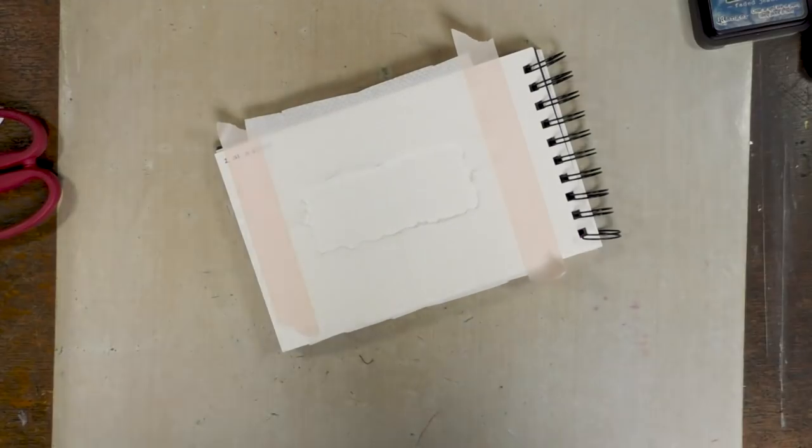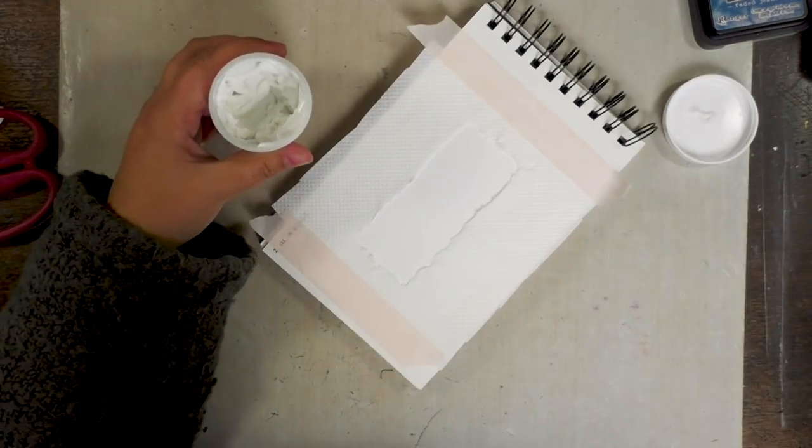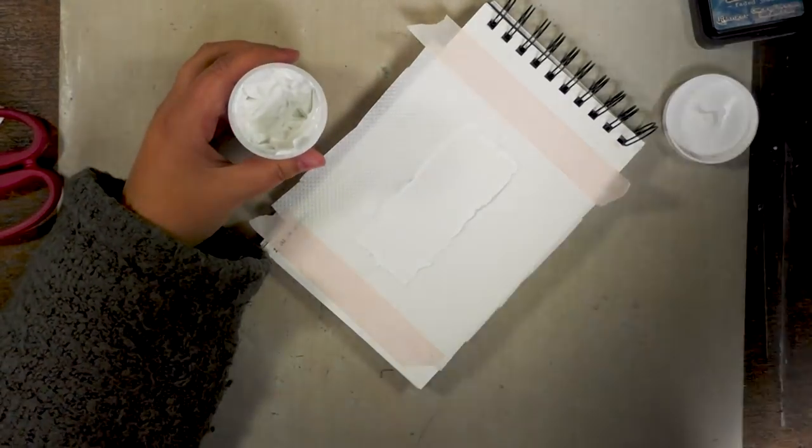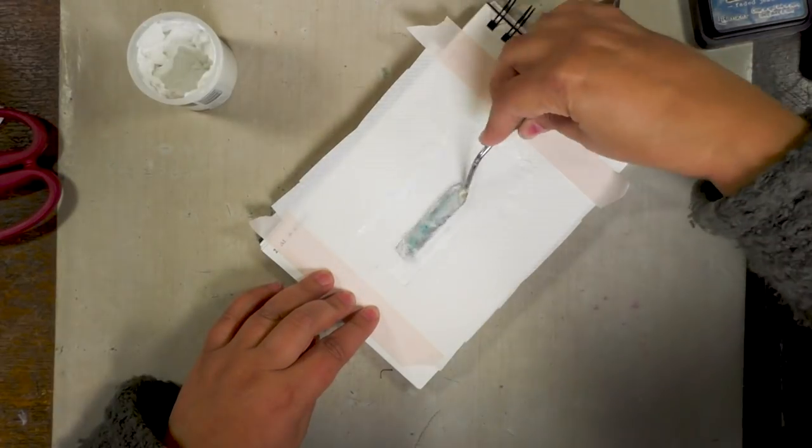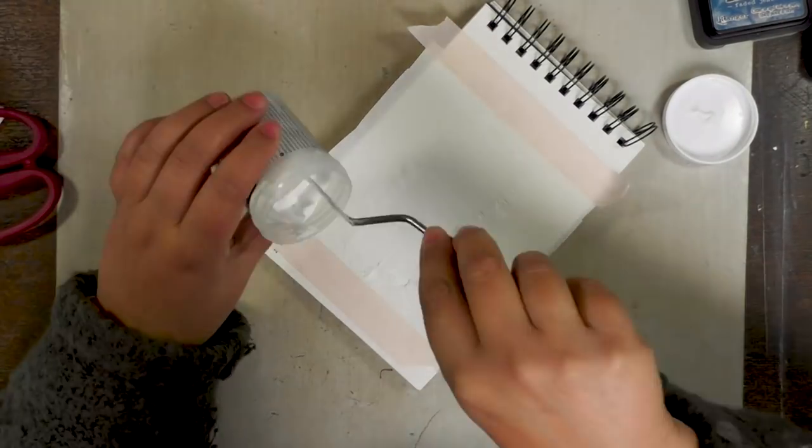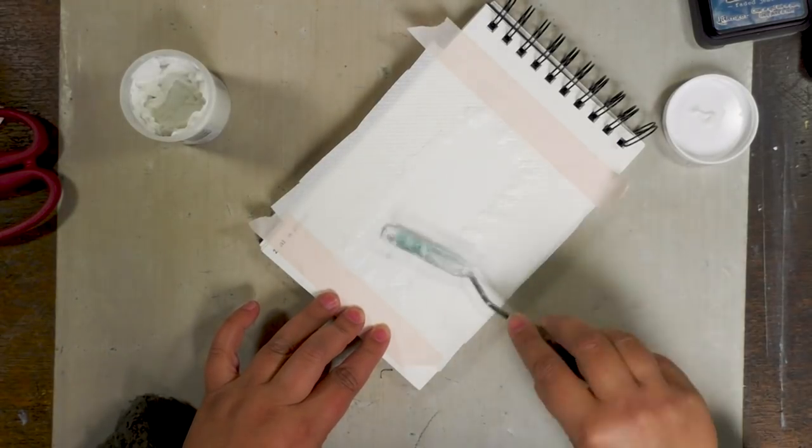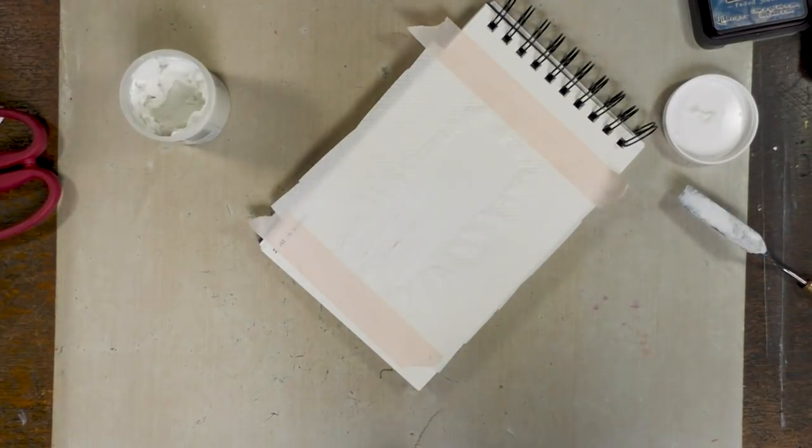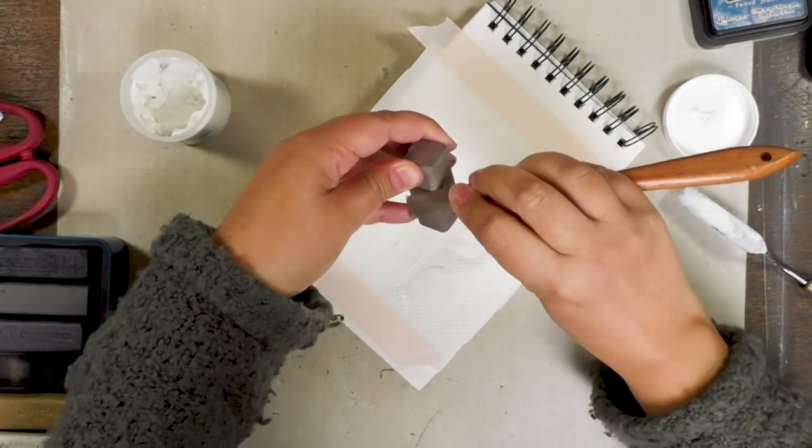I could go back in with the distress ink but let's spice it up a little and do it with some modeling paste this time. Just make sure that you work away from the edge from your piece of kitchen roll so that you don't push the medium underneath. And of course you need a medium that will stay on top of the kitchen roll and that will not just sink in.